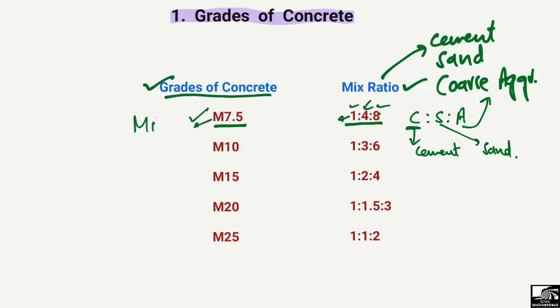M stands for mix, and 7.5 shows the strength of the concrete in the unit of megapascals. So M7.5 means the strength of the concrete is 7.5 MPa. For the second grade, M10 — mix, 10 megapascals strength — it has a ratio of 1:3:6, where 1 is cement, 3 is sand, and 6 is the quantity of aggregate.